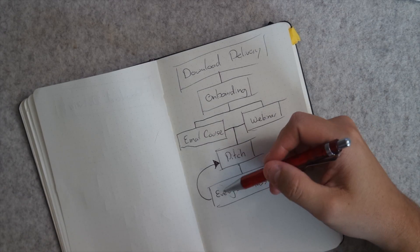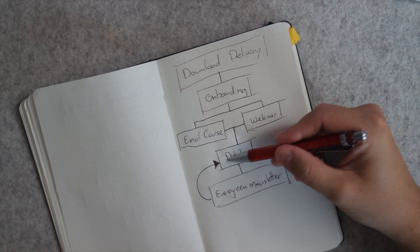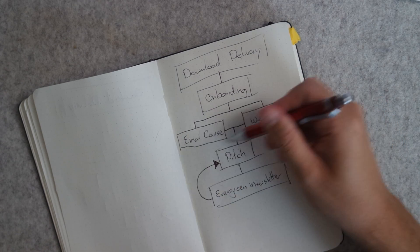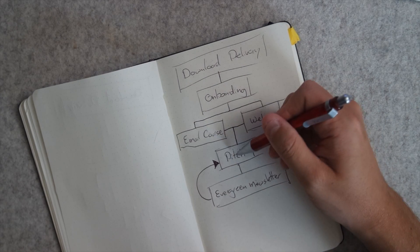After the pitch, whether they purchase or not, they go into the evergreen newsletter — a regular newsletter where all emails are pre-written and automatically sent out once a week. Every two or three months they go back into a pitch automation for a different product or a new offer.